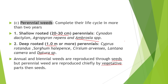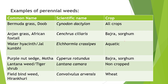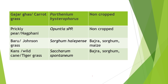Vegetative propagules are modifications of stem, roots, or leaves. Examples of perennial weeds include: Bermuda grass (Cynodon dactylon), Anjan grass (Setaria ciliaris), water hyacinth (Eichhornia crassipes) found in aquatic conditions, purple nut sedge or Motha (Cyperus rotundus), Lantana weed or tiger shrub (Lantana camara), field bindweed (Convolvulus arvensis), gajar grass or carrot grass (Parthenium hysterophorus), Nagfani (Opuntia), Johnson grass (Sorghum halepense), and Kans (Saccharum spontaneum), a wild species of sugarcane.